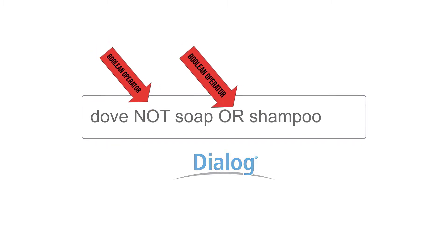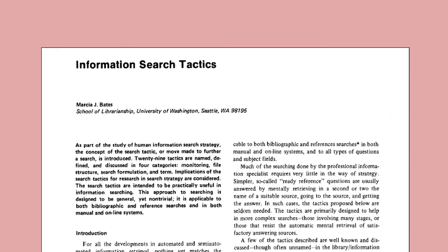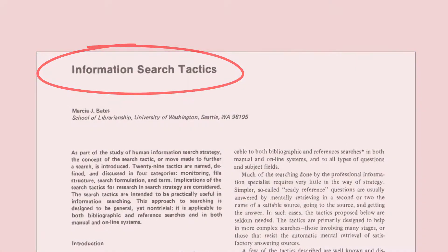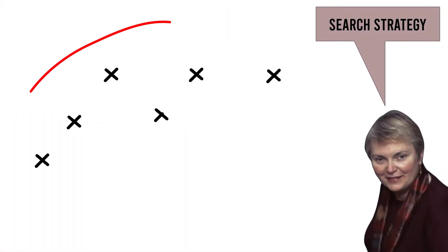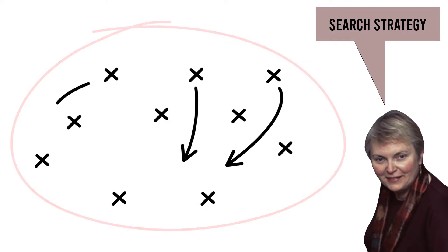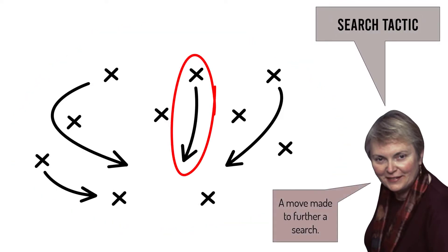The week of that lesson, Dr. Bates assigned her 1979 paper titled Information Search Tactics. Bates explains that a search strategy is a plan for a whole information search. A search tactic is a smaller step, which she defines as a move made to further a search. The paper contains 29 such information search tactics.